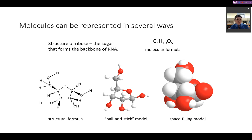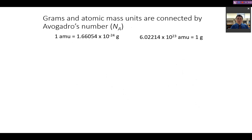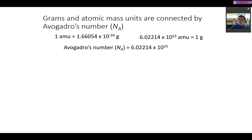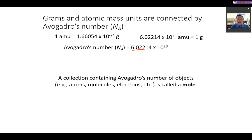Now let's talk about Avogadro's number. Avogadro's number allows us to relate masses in grams and in amu — specifically, Avogadro's number worth of amu equals the mass of one gram. Avogadro's number is equal to 6.02214 × 10²³, often shortened to 6.022 × 10²³. A collection of Avogadro's number worth of objects is called a mole — so a mole of something is 6.022 × 10²³ of that object.